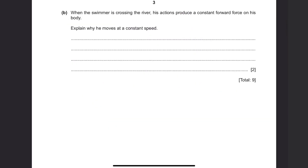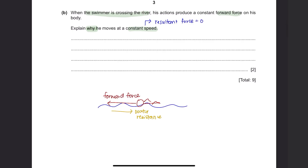Question B: When the swimmer is crossing the river, his actions produce a constant forward force on his body. Explain why he moves at a constant speed. When an object moves at constant speed, the resultant force equals zero. As the swimmer swims forward, he experiences a forward force and water resistance in the opposite direction. For constant speed, the forward force must equal the water resistance acting in the opposite direction.